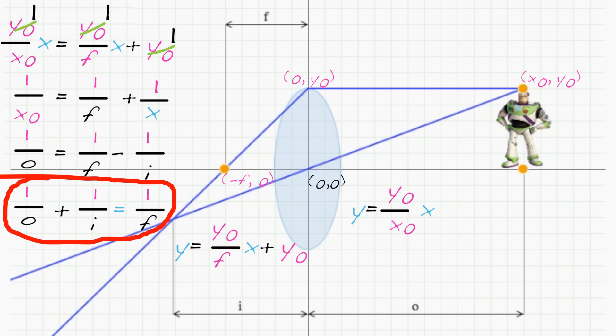Ta-da! This is called the simple lens law. It says that an object at distance o from the lens with focal length f comes into focus at distance i.